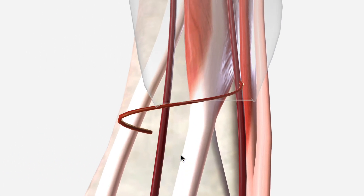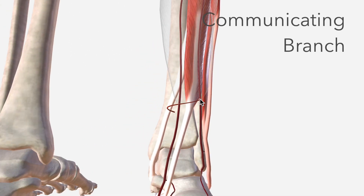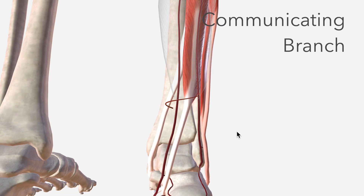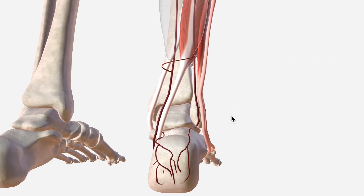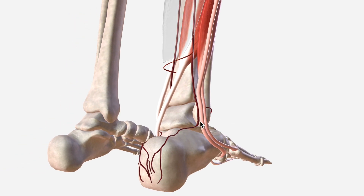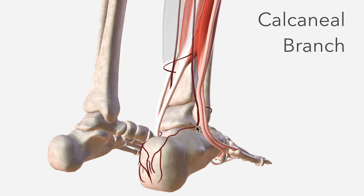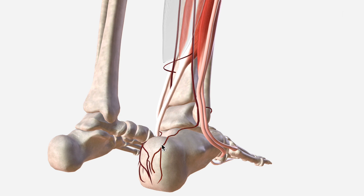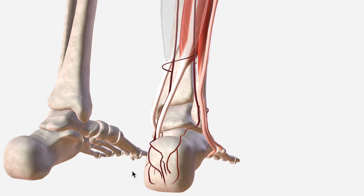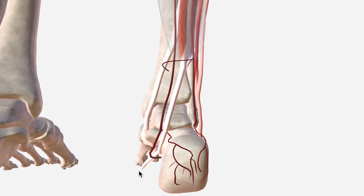Around the back here is the communicating branch departing from the fibular artery, which anastomoses with another communicating branch that comes from the posterior tibial artery. The last branch — the terminal branch — is the calcaneal branch of the fibular artery, which forms a network with the calcaneal branch that comes from the posterior tibial artery.